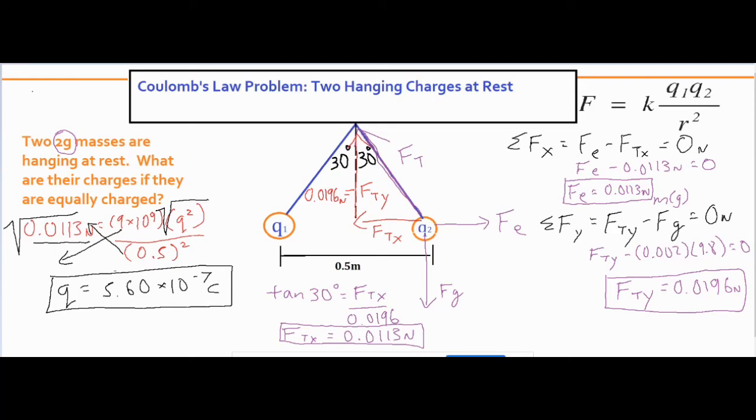Now because we squared our q value we don't really know if this is positive or negative so you would have to have a little background knowledge to know if it was a negative 5.60 times 10 to the negative 7th or positive but either way that's going to be your value.